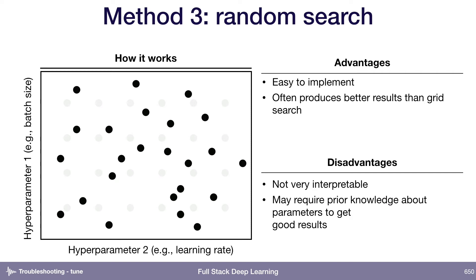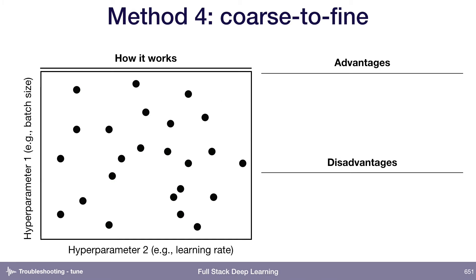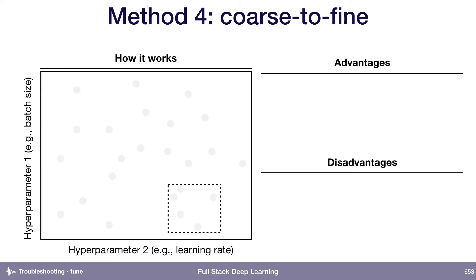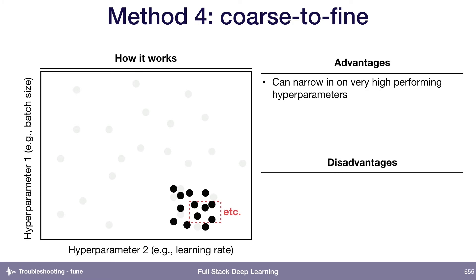You also might need to know in advance what the ranges to sample from are. A way to make this better is to do coarse-to-fine random searches. You do a random search, look at the performance of each point, select the best-performing ones, zoom in on that range, and resample. You can do this over and over again. This way you can start with a very wide range and quickly narrow in on the high-performing ones. This tends to be the most used method I see among practitioners, though it is somewhat manual.